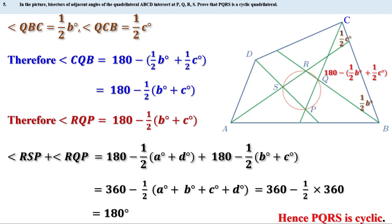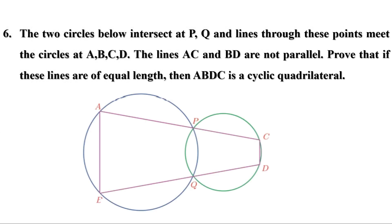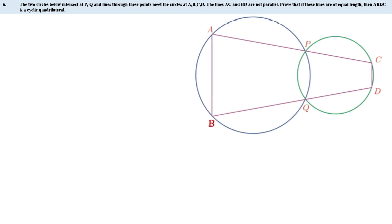Now let us do the remaining problems on page 60. Two circles intersect at P and Q, and lines through these points meet the circles at A, B, C, D. The lines AC and BD are not parallel. Prove that if AC and BD are of equal length, then ABDC is a cyclic quadrilateral.